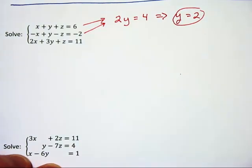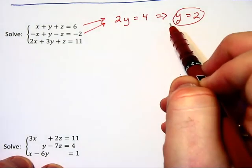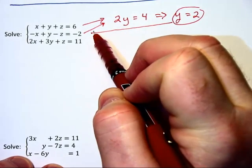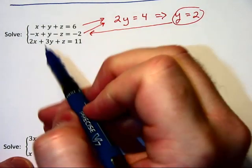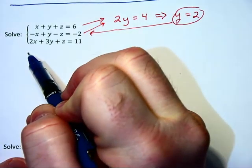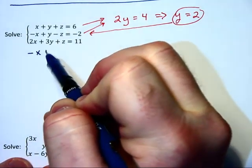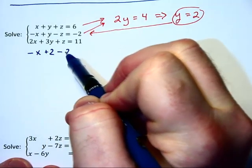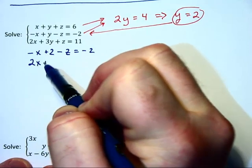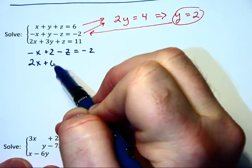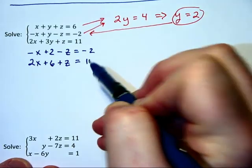But we do need to find out what x and z are. So what I suggest we do is take 2 for y and substitute it into each of these second and third equations. That gives us negative x plus 2 minus z is equal to negative 2, and 2x plus 3 times 2, that becomes 6, plus z is equal to 11.